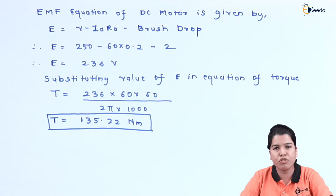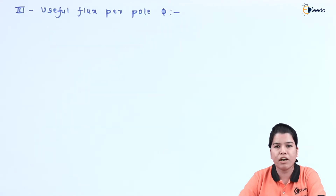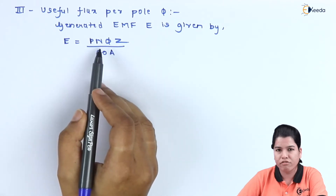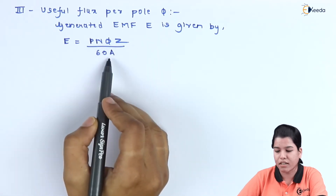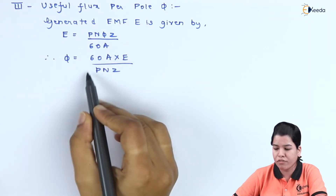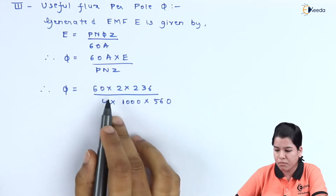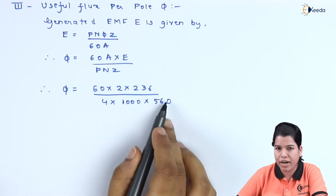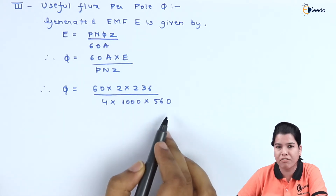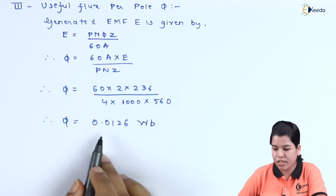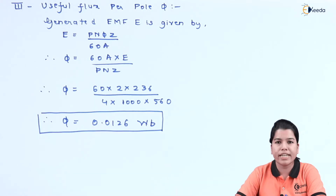Next, we find the useful flux per pole. The formula for generated EMF is E = P * N * phi * Z / (60 * A). Rearranging to solve for phi and substituting values: phi = 60 * 2 * 236 / (4 * 1000 * 560). Solving, phi = 0.0126 Weber.